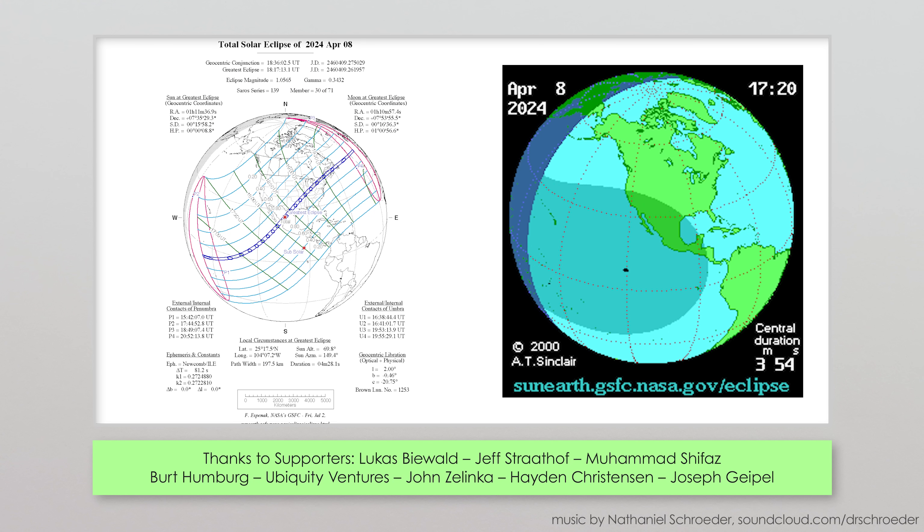If you live in North America, the date of the last ever total solar eclipse is Monday, April 8th, 2024. Wait, no, that's just the next total solar eclipse as of the time of this video.